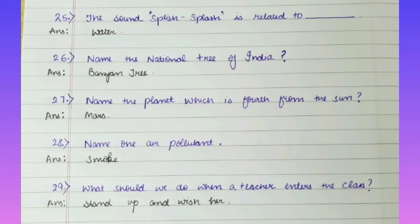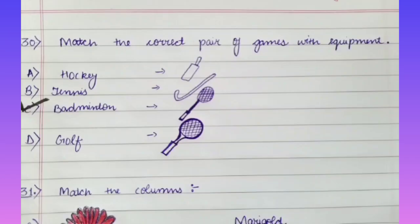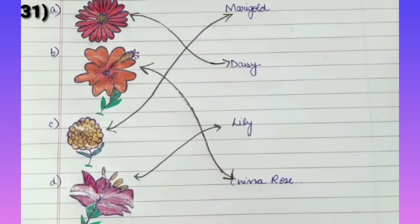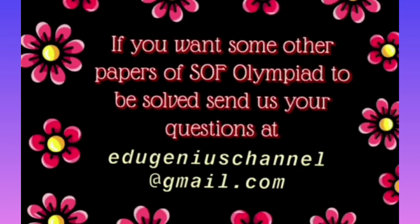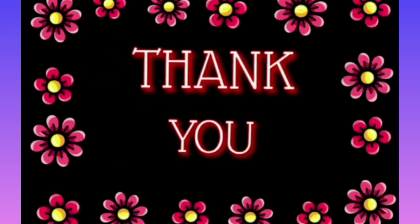Question No. 29: What should we do when a teacher enters the class? Answer is Stand up and wish her. Question No. 30: Match the correct pair of games with equipment. Answer is Option C, that is Badminton. Question No. 31: Match the following. The answer is given below. If you want other SOF Olympiad papers to be solved, send us your questions at edutinoschannel@gmail.com. Thank you.